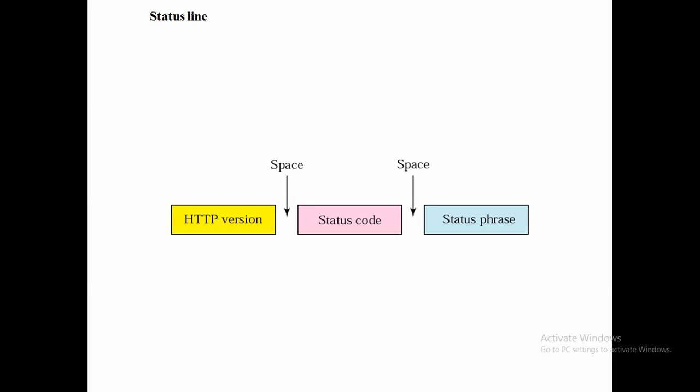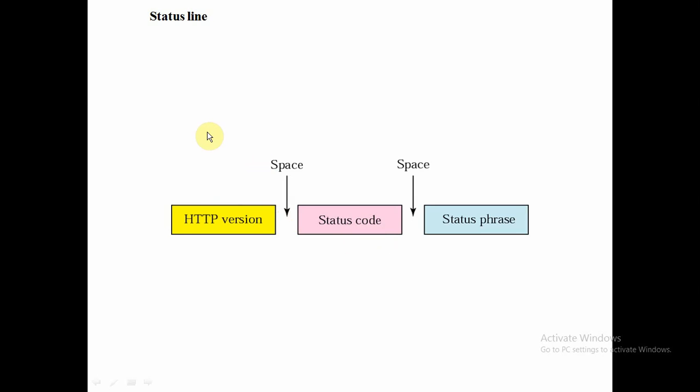In the status line, there is the HTTP version followed by a space, then the status code, and then the header name and header value separated by a space. There are different types of general headers, including Accept, Accept-Charset, Connection, Date, MIME-Version, and Upgrade.